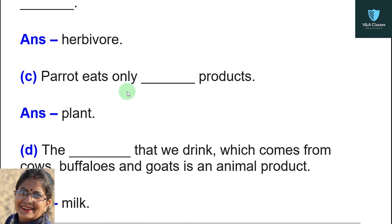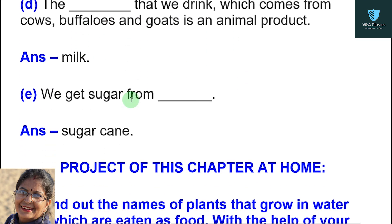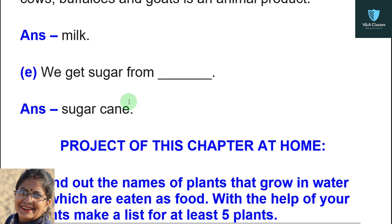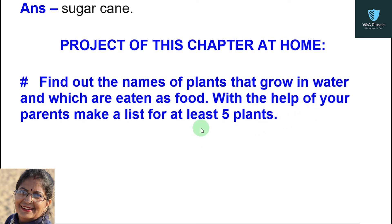Next: parrot eats only blank products — answer: plant. Next: the blank that we drink, which comes from cows, buffaloes, and goats, is an animal product — answer: milk. Next: we get sugar from blank — answer: sugar cane. Now the project: find out the names of plants that grow in water and which are eaten as food. With the help of your parents, make a list of at least five plants.